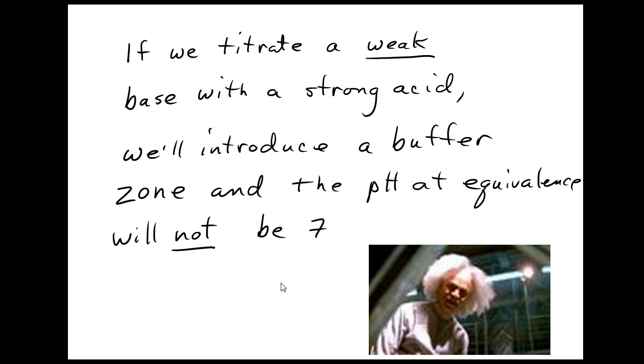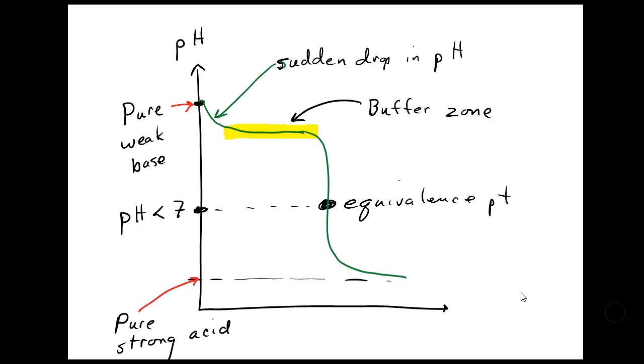If we titrate a weak base with a strong acid, we'll introduce a buffer zone, and the pH at the equivalence point will not be equal to 7. It's going to be similar to yesterday. We'll start with our pure weak base pH right here. And as soon as we add some strong acid, the pH is suddenly going to drop. So we'll have this little hump at the beginning, just like we did yesterday. And then, when we have excess weak base with a strong acid, we'll have a buffer zone right here.